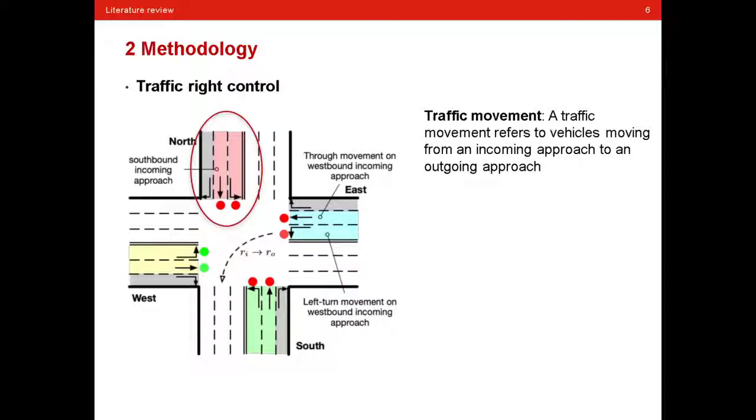Now let's begin the methodology review with the basic knowledge about traffic light control. First, here is the definition of traffic movement. A traffic movement refers to vehicles moving from an incoming approach to an outgoing approach.